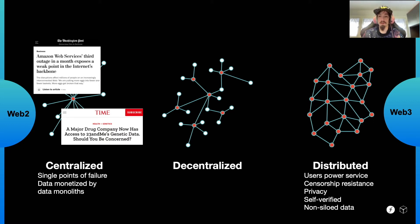IPFS and Filecoin are not the answer to all of the problems, but they are the answer to some, particularly when it comes to removing borders and silos for data. Over the course of the next 40 minutes, we'll see that IPFS — a peer-to-peer hypermedia protocol for content addressing — and Filecoin, the world's largest distributed storage network, are important building blocks of this new Web 3 generation.